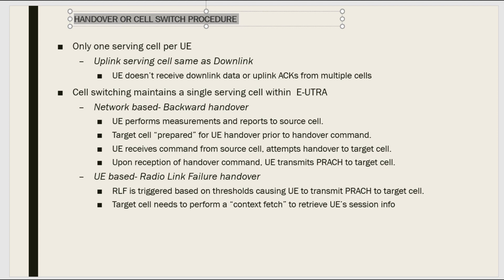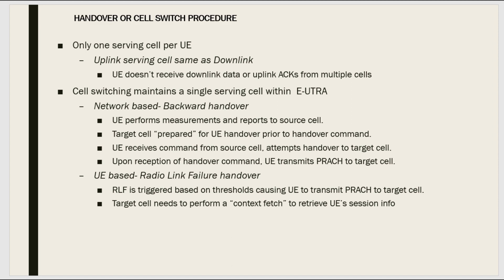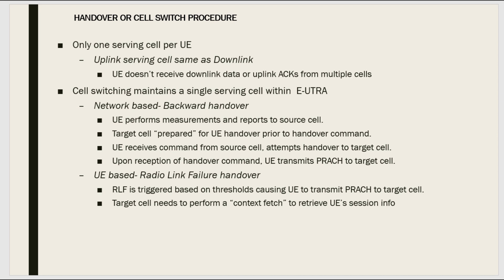Let us look into the handover or cell switch procedure present in LTE or E-UTRA networks. As we know, there will be only one particular serving cell per UE, which indicates that both the serving cells in the uplink and downlink are the same. This also implies that a UE cannot receive from multiple cells. Even during the handover process, the LTE UE cannot have a connection with multiple eNodeBs.